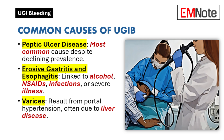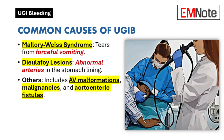Esophageal and gastric varices occur as a consequence of portal hypertension, with alcoholic liver disease being the most common underlying cause in the United States. Mallory-Weiss syndrome refers to tears at the gastroesophageal junction, typically caused by forceful vomiting.